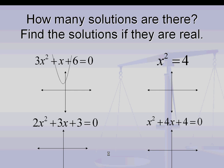For the first one, 3x² + x + 6 = 0, the parabola does not touch the x-axis at all, so we have no real solutions. For the one below it, 2x² + 3x + 3 = 0, again, the parabola does not touch the x-axis, so we have no real solutions.